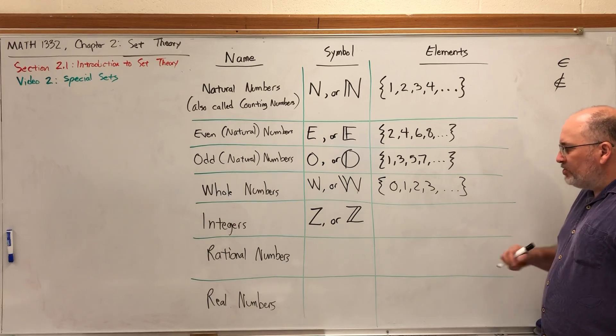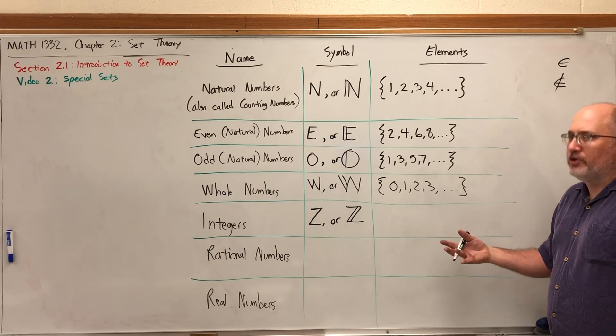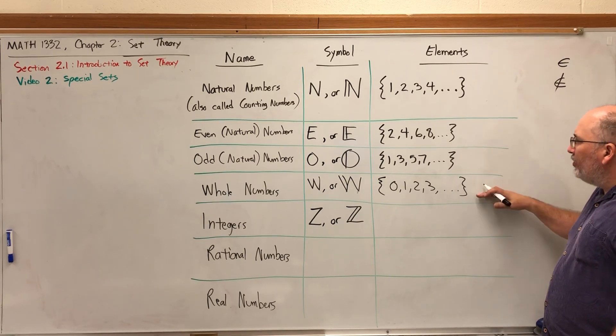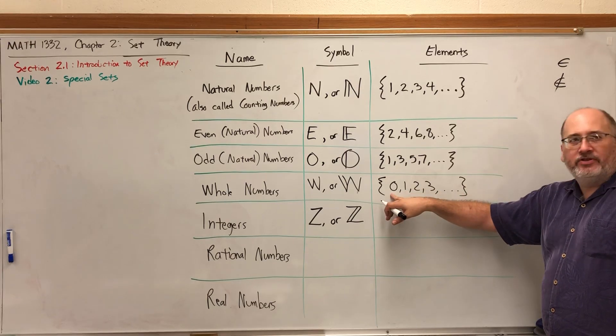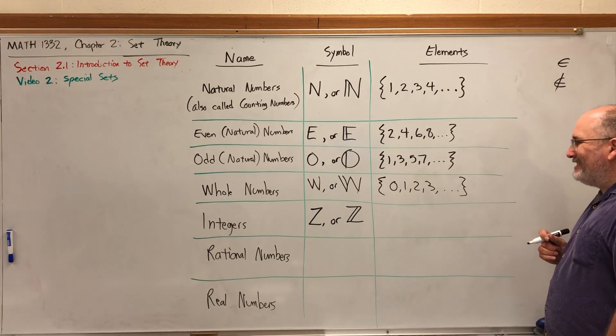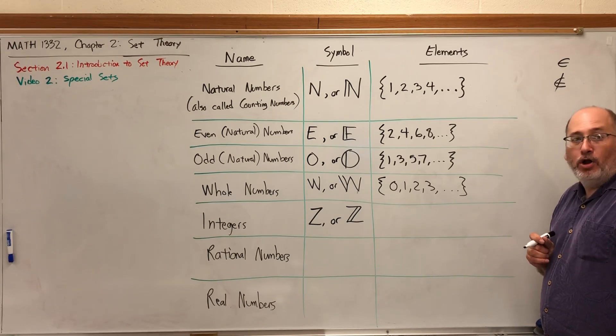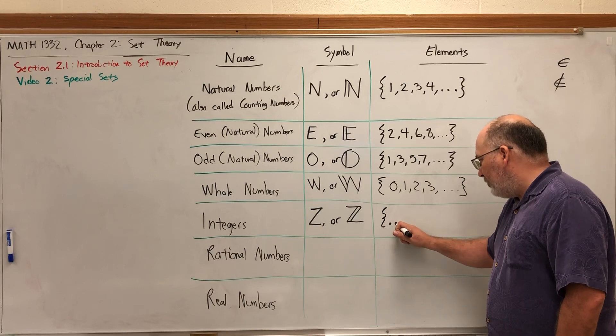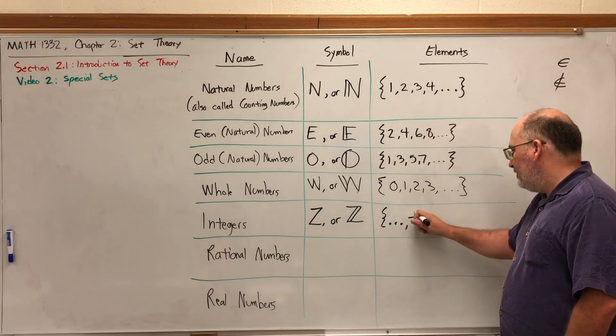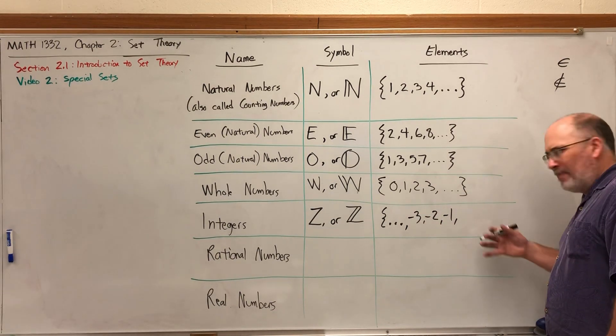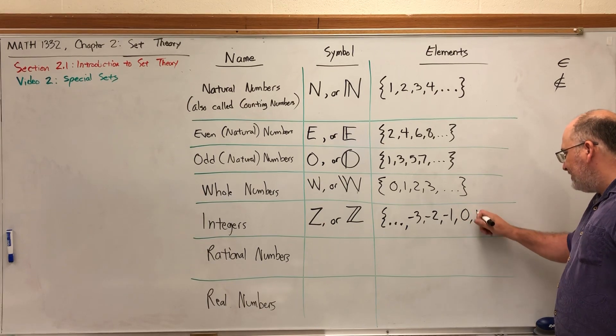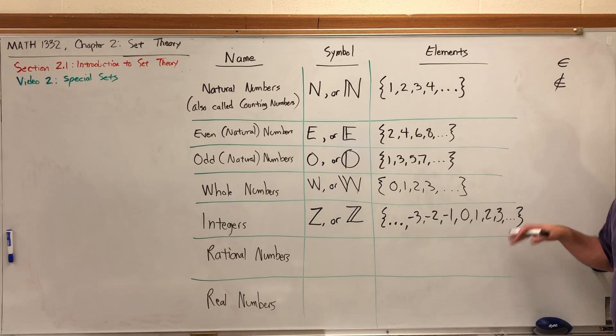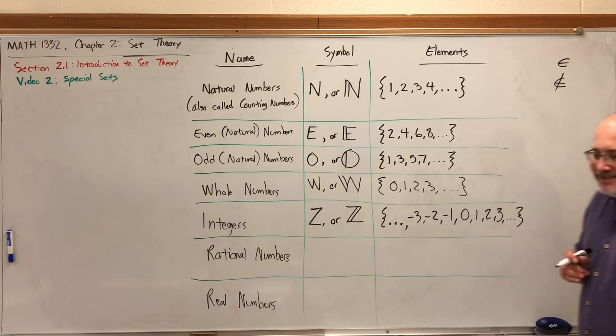From the natural numbers to the whole numbers, we took the natural numbers and included the element zero. To get the integers, we're going to take the whole numbers and include all of their negatives. We need to start this set with ellipses: negative three, negative two, negative one, zero, one, two, three, with ellipses on both sides. That's the set of integers.